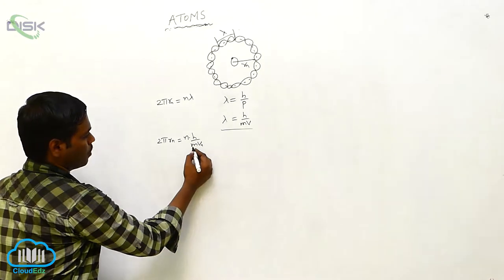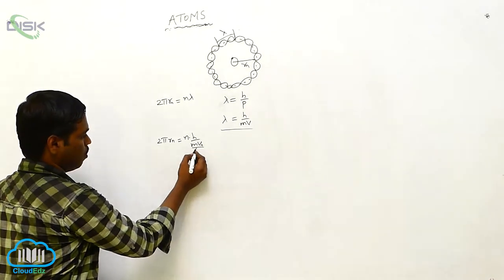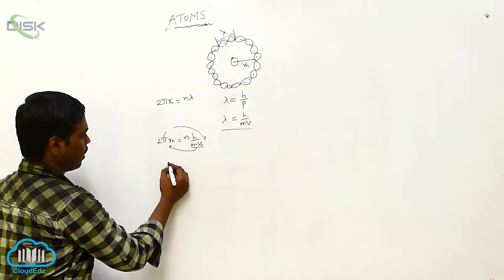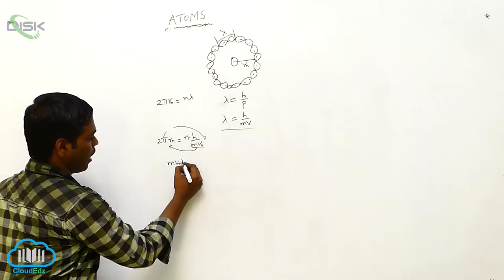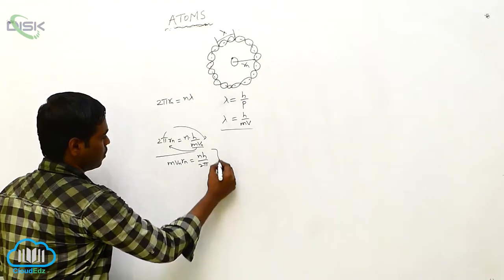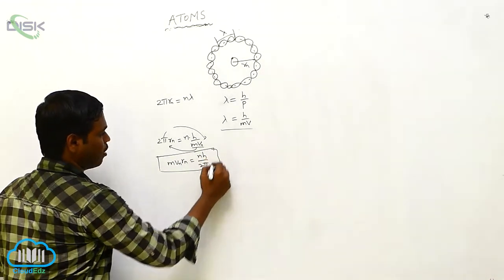By this we can write mvn, bringing to this side and 2π to this side, then we get mvn·rn is equal to nh by 2π. This is Bohr's second postulate.